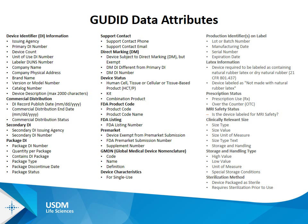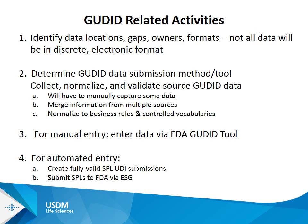Hopefully we won't see any more changes to the data set before our first compliance date in September of this year. As I mentioned, there are a number of activities that need to go on in order to create this data set that then gets validated and submitted to GUDID. Identifying the data is often the first challenge — where does it exist, who owns it, what format is it in, what are the SOPs around changes to it? Much of the data may not exist as a discrete data element and will have to be gathered and transformed into the appropriate format the database expects.